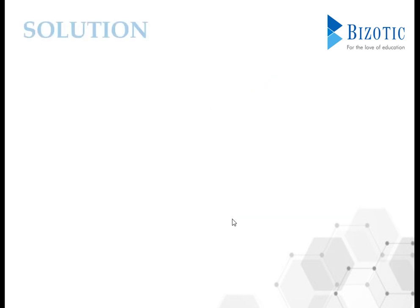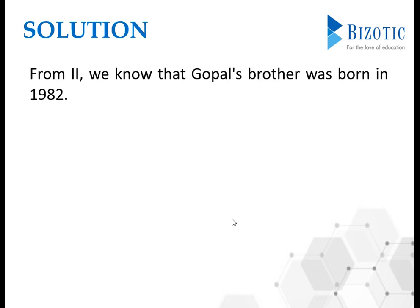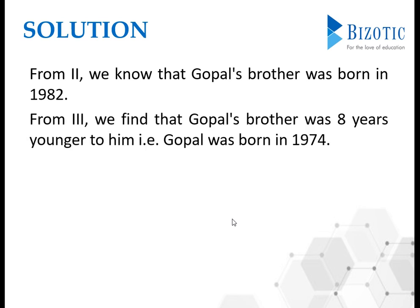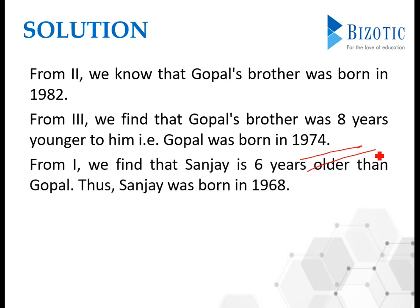Let's begin with the solution. From statement 2, we know Gopal's brother was born in 1982. From statement 3, Gopal's brother was eight years younger than Gopal — so Gopal was born in 1974. Next, from statement 1, Sanjay is six years older than Gopal, so Sanjay was born six years before Gopal, which is 1968.